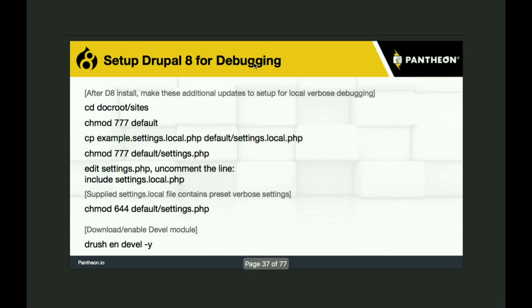With a couple more commands, you can prepare Drupal 8 for debugging. In your settings.php file, you uncomment a single line that says if you find a local.settings.php file at the peer level, pull that in. In that local settings file there are directives telling Drupal to throw errors in a really verbose, more regular-English fashion, so your debugging will be more clear and specific because of that change. Remember to change that back when you go up to test or live.